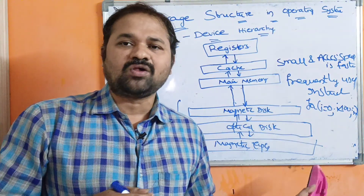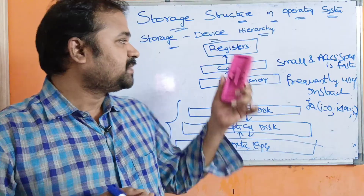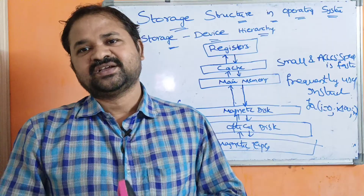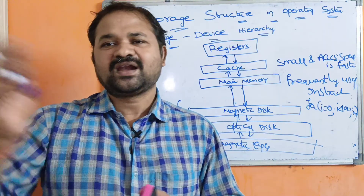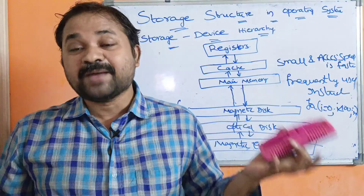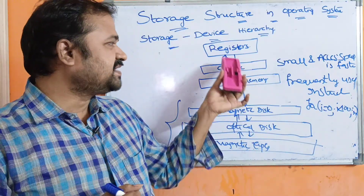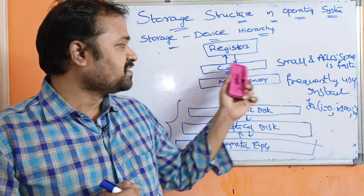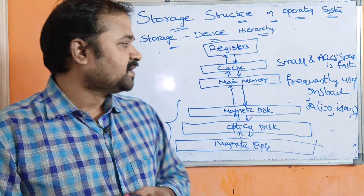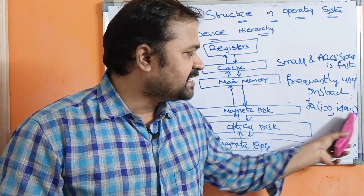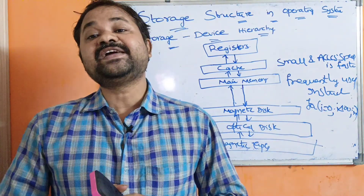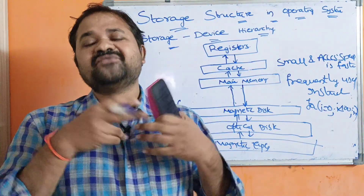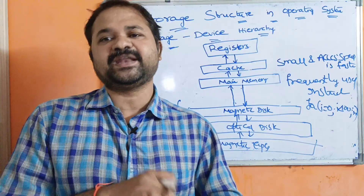CPU cannot access secondary memory devices. The problem with a register is that it stores only a small piece of information — 16-bit, 32-bit, or 64-bit. So if we have MB of data, we can't store that much information in a register. In that type of situation, the operating system uses cache memory. CPU can access cache memory content very, very faster than if the data resides in main memory.